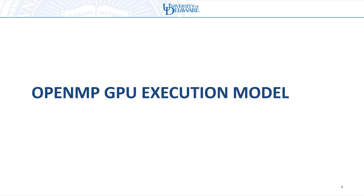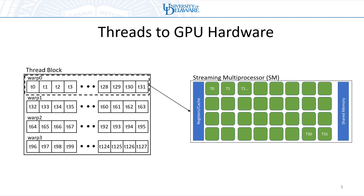Starting off with the execution model: when we talk about how GPU threads are mapped to the actual hardware, we're always thinking of them in terms of warps, or for AMD GPUs in terms of wavefronts. In an NVIDIA warp, it's a group of 32 threads that execute together on the processor at the same time, and separate warps from that thread block effectively take turns on the processor. So we have this inherent level where we're doing 32 threads at any given time — what I'm calling the warp level of parallelism.